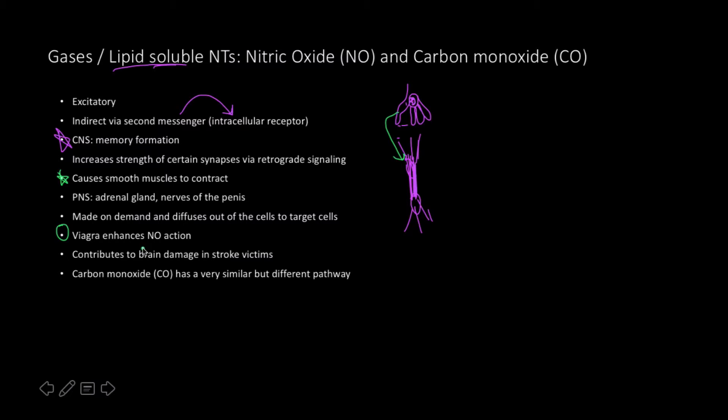Now it also causes certain types of smooth muscles to contract. If you've ever talked about this right here, Viagra enhances nitric oxide. That's what we're doing here. And in the peripheral nervous system you can find it in the adrenal gland and then the nerves of the penis because of what I just talked about there. It's made on demand and it diffuses out of the cells to the target cells because it is lipid soluble.